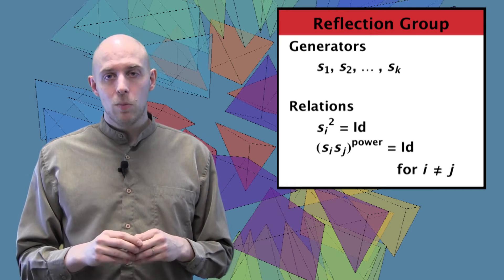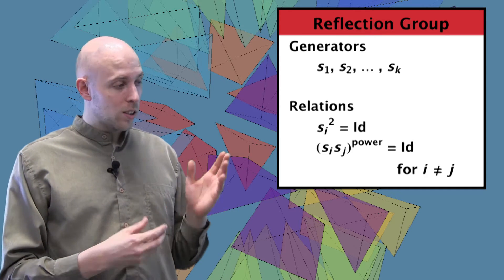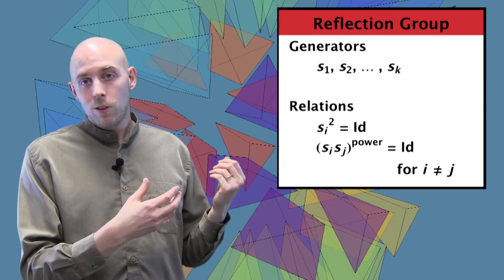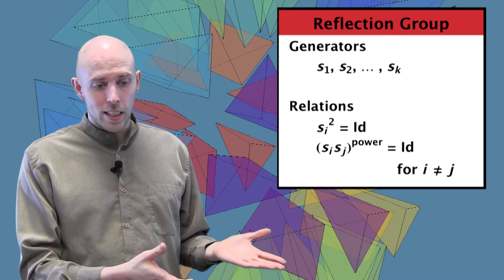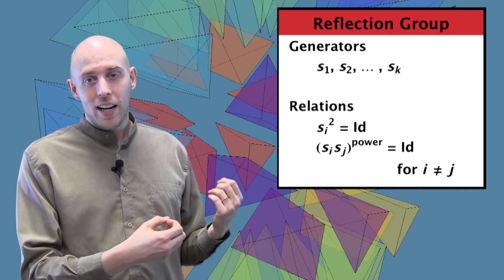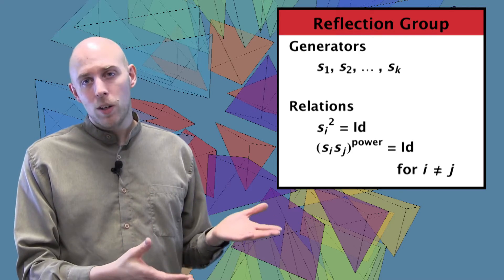A reflection group G is completely determined by its generators and by its relations. So for generators, we're going to take some number of generators, S1 through SK. And for each of these generators, we'll have the relations: Si² is equal to the identity, and (Si, Sj) to some power is equal to the identity when i is not equal to j.